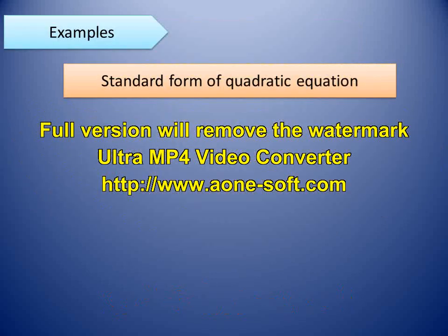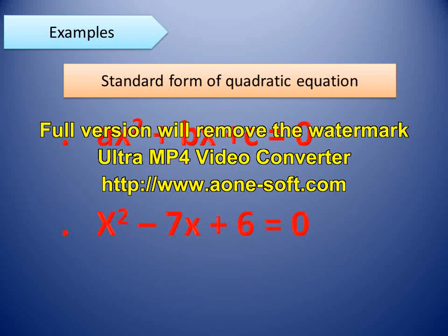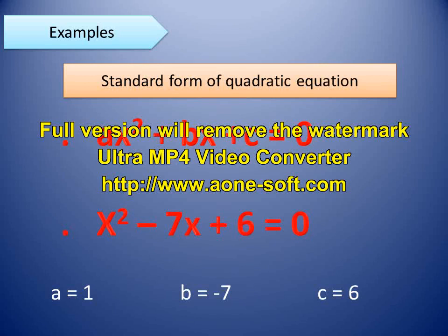The equation ax² + bx + c = 0 is also called the standard form of quadratic equation. For example, take x² - 7x + 6 = 0. Here the unknown variable is x; the coefficient of x² is 1, the coefficient of x is -7, and the constant is 6. So we write a = 1, b = -7, and c = 6.